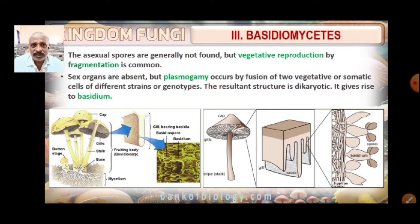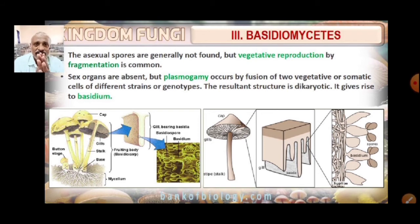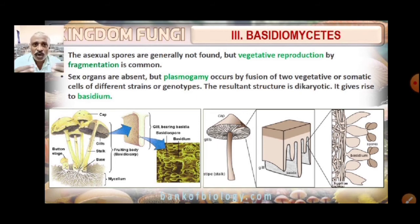Sex organs are absent in Basidiomycetes, but plasmogamy occurs by the fusion of two vegetative or somatic cells of different strains or genotypes. The resultant structure is dikaryotic — because there is the presence of two nuclei per cell, referred to as the dikaryon.